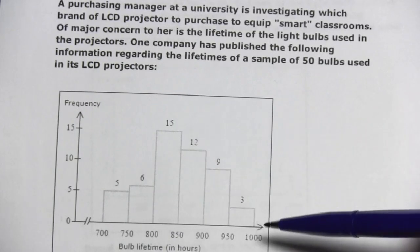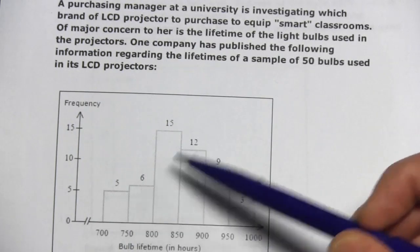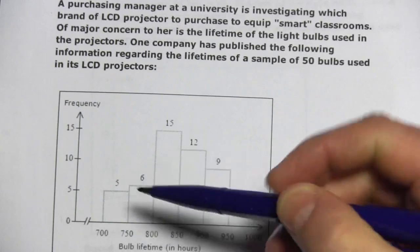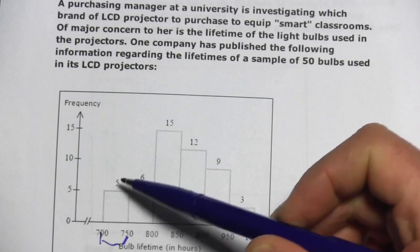When we make a cumulative frequency polygon, it's just another graph to show how the frequencies add up across these ranges down here. The frequency from 700 to 750 is 5.